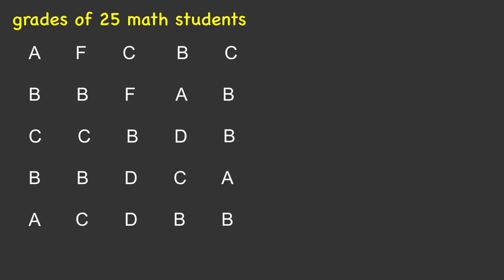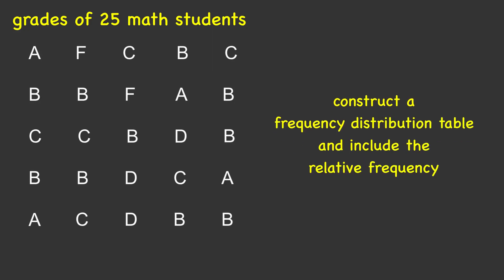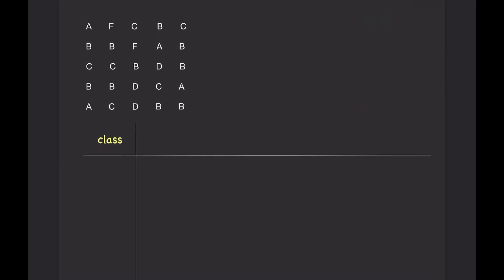The grades of 25 math students are listed here. Construct a frequency distribution table that includes the relative frequency. Notice the only grades listed here are A, B, C, D, or F. We will use each grade listed in the data set as a class.